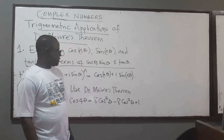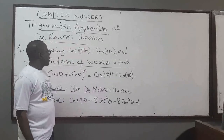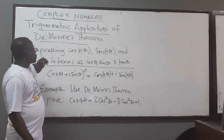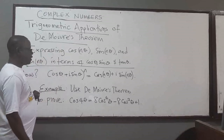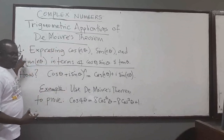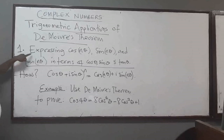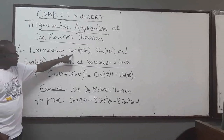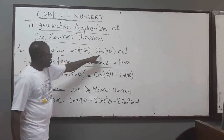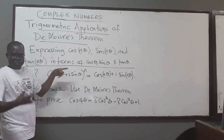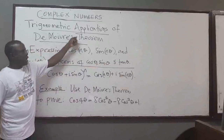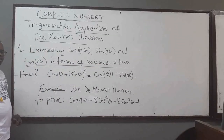Hello, welcome to this lecture. We are going to continue with some trigonometric applications of De Moivre's theorem. We've already seen how to apply this theorem. The first application we want to look at is how do you express things like cos(nθ), cos(4θ), cos(6θ), sin(nθ), tan(nθ) in terms of just cos θ, sin θ, and tan θ? You can apply De Moivre's theorem to do those computations.